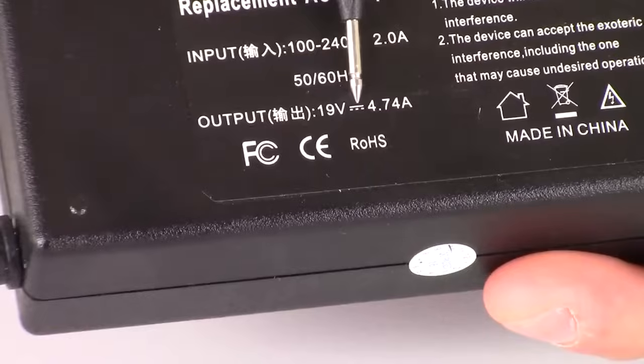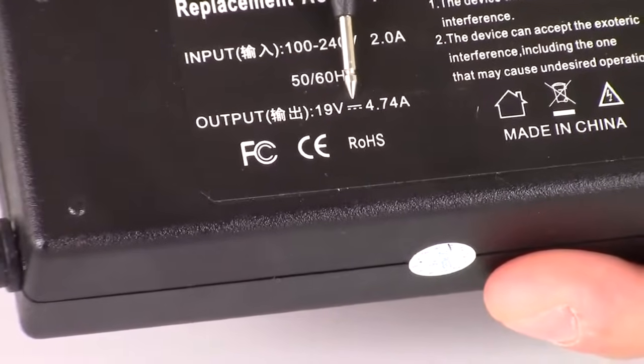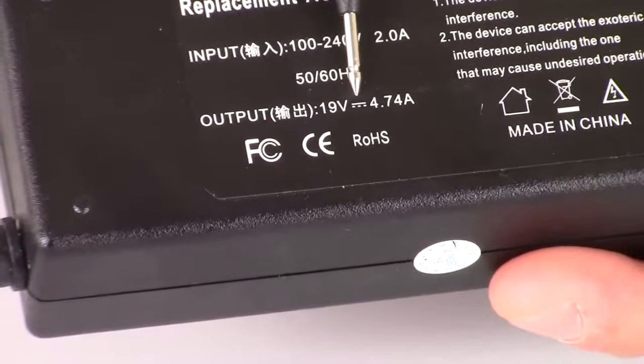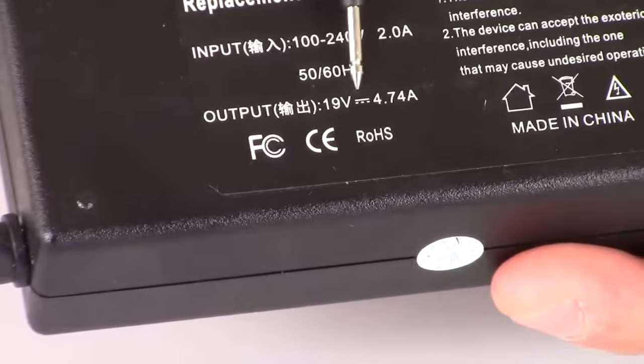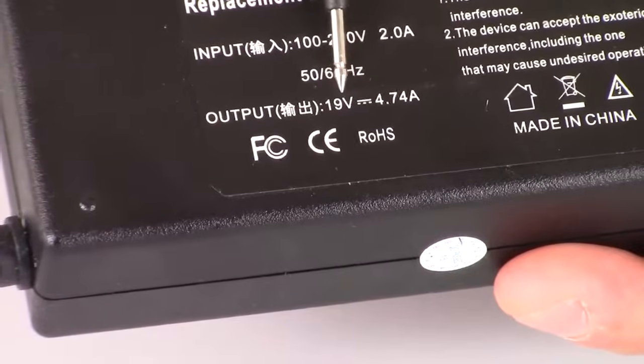And right near the 19 volt, you see this little symbol. It's a line on top with three short lines in the bottom. So we're going to be testing to make sure that this is correct, the 19 volts.